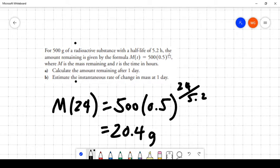So after 24 hours, we would be left with 20.4 grams of the substance. So that's the easy part. Part B is a little more challenging.